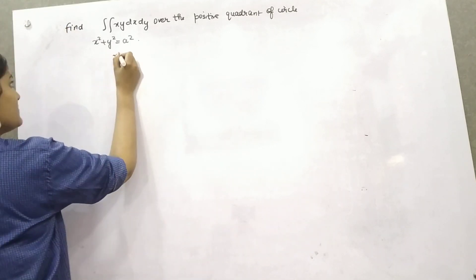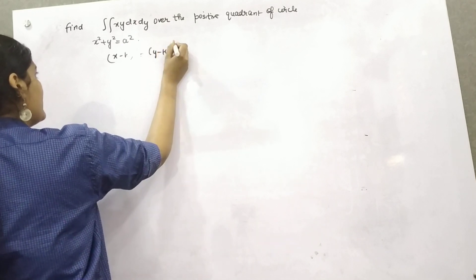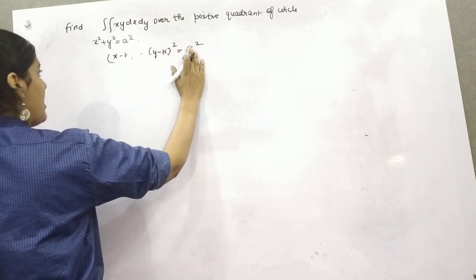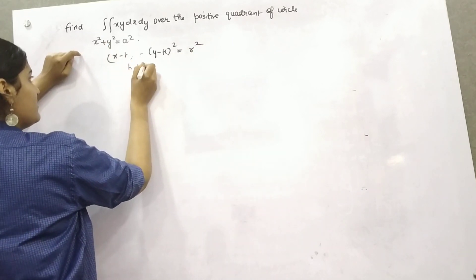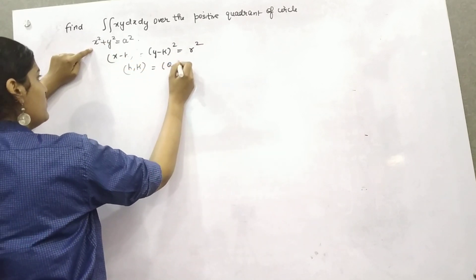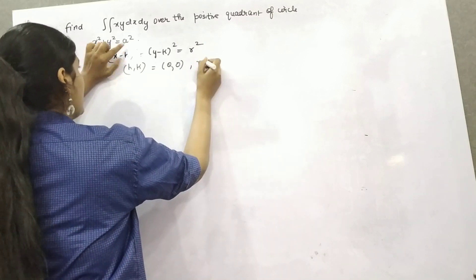You know the standard equation of circle is (x minus h) whole square plus (y minus k) whole square equals r square. So if you compare h and k, the center of the circle will become 0. Here it is given (0,0) and radius is a.